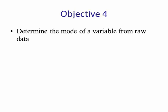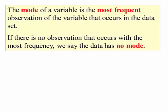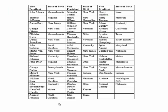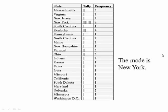Lesson objective number four: determine the mode from raw data. The mode of a variable is the most frequent observation in the data set. If no observation occurs with the greatest frequency, we say the data has no mode. For example, the data represents the vice presidents of the United States and their state of birth. The mode is used mainly when data are categories. Tallying the states, New York has the largest frequency — 8 — so the mode is New York.